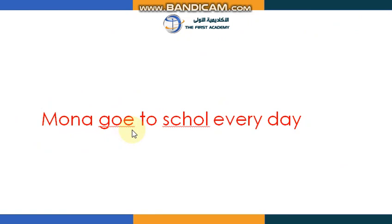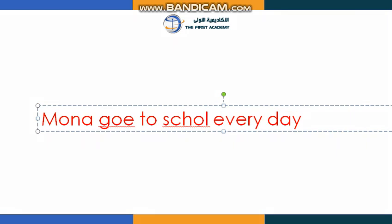Let's read it: 'Muna goes to school every day.' The sentence should start with a capital letter — as you can see, that is correct. But look at this word: we need to fix it because there is a spelling mistake. Do you remember that in the simple present tense we need to add 's' to the verb when the subject is singular?